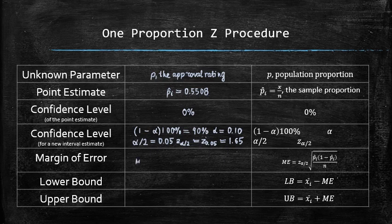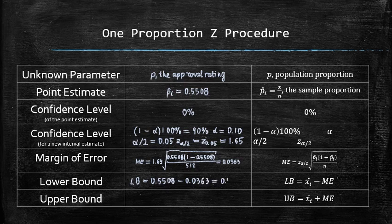We can find the margin of error using the formula. So, it becomes 0.0363. Now, we can find the lower bound by subtracting 0.0363 from 0.5508 and get 0.5145. And we can also get the upper bound by adding 0.0363 to 0.5508 to get 0.5871.